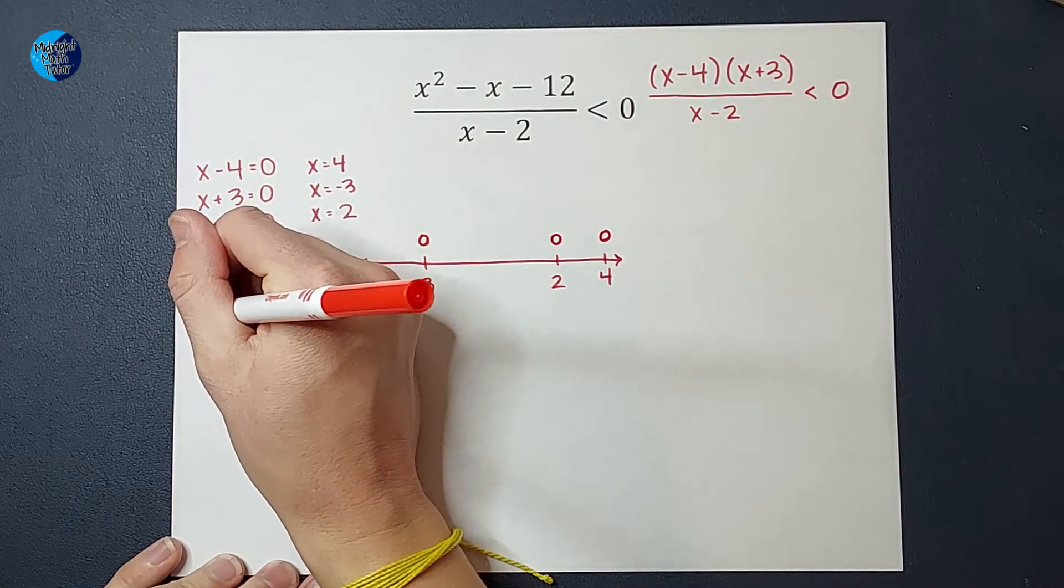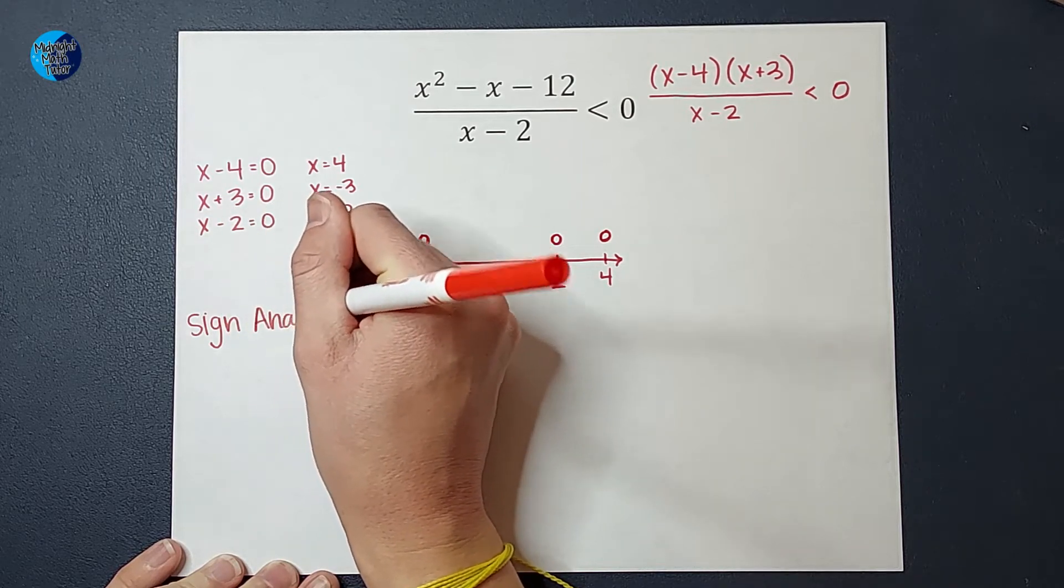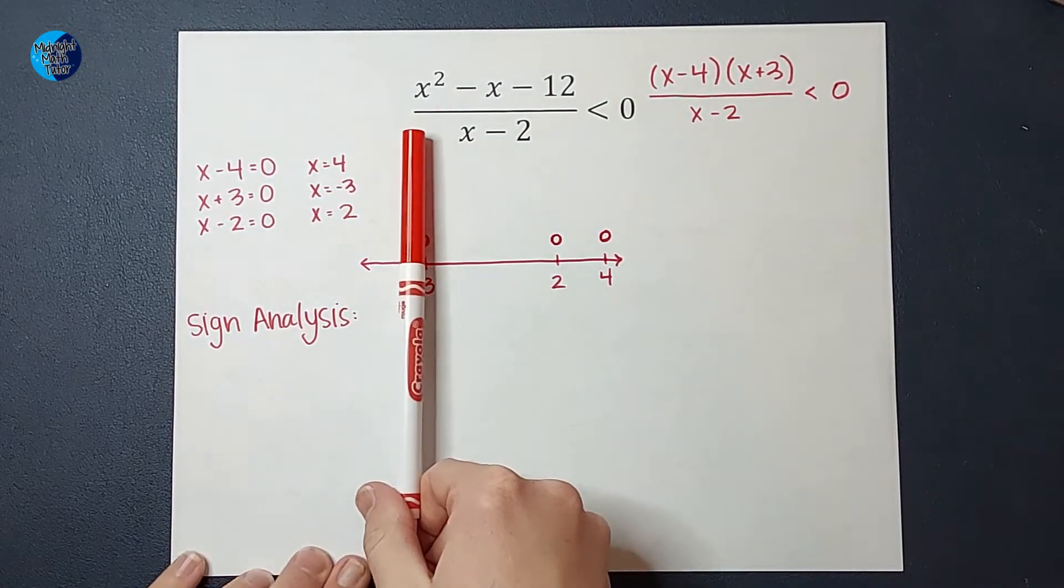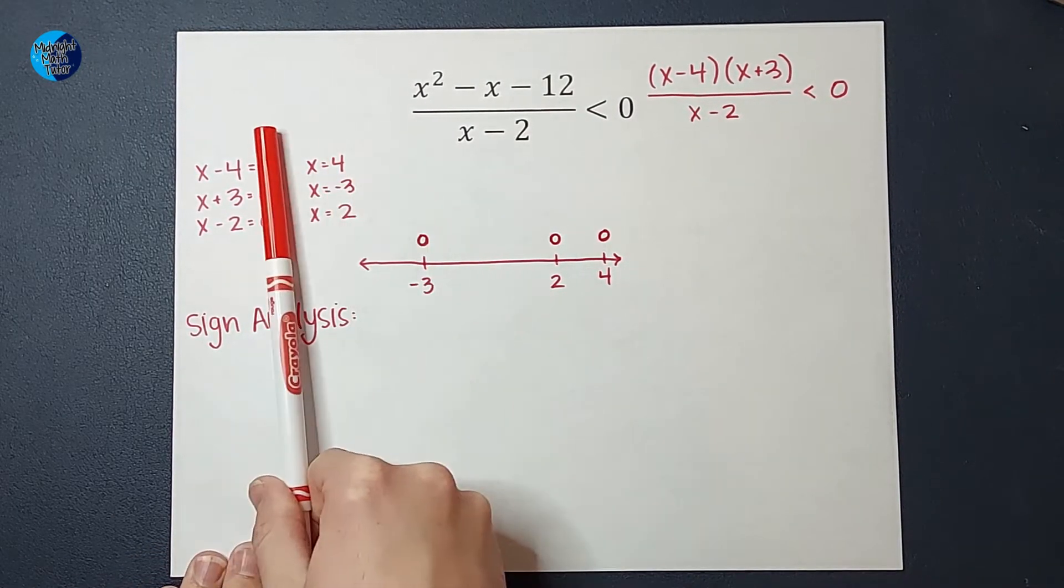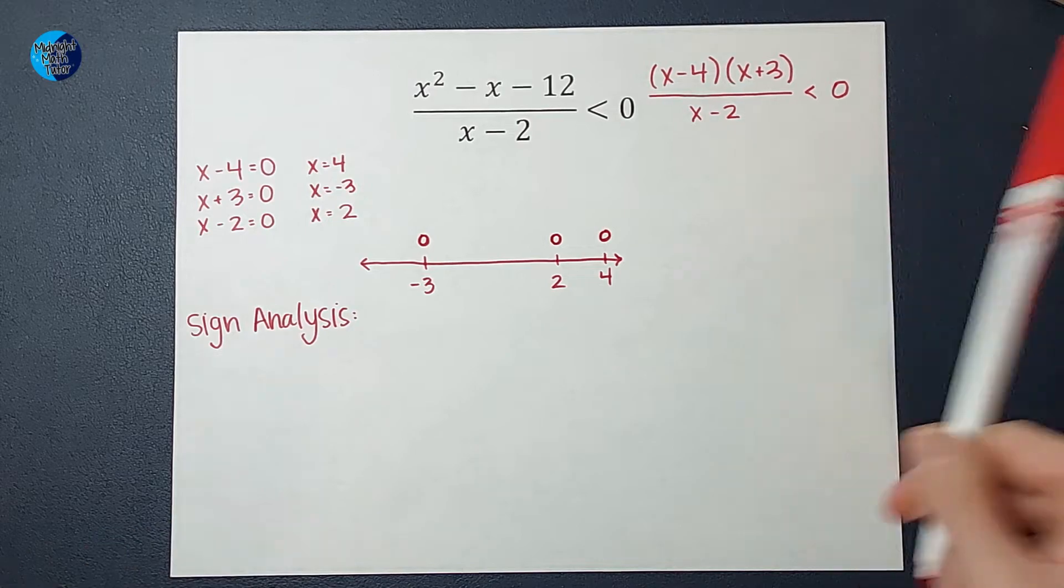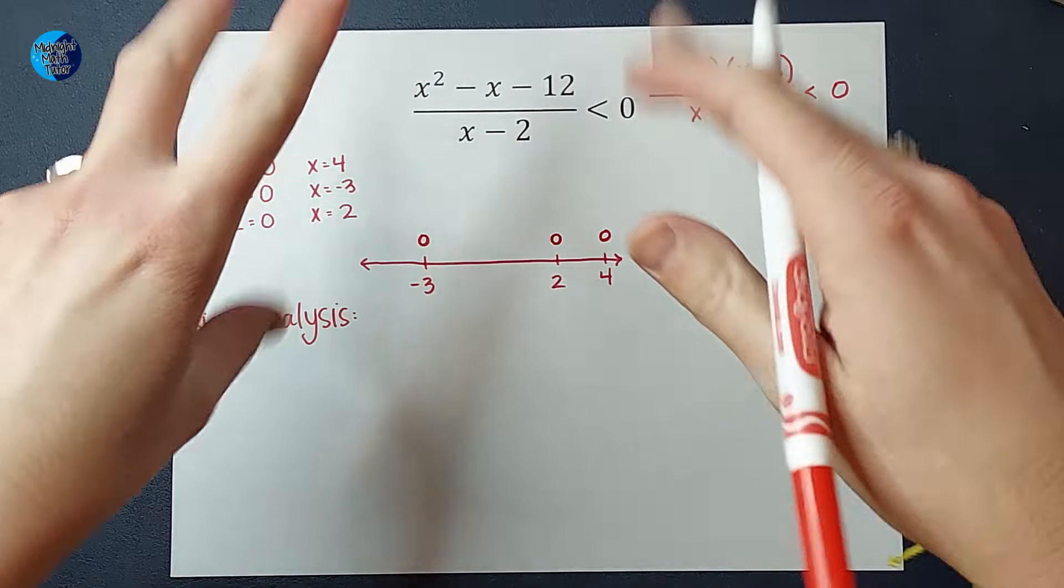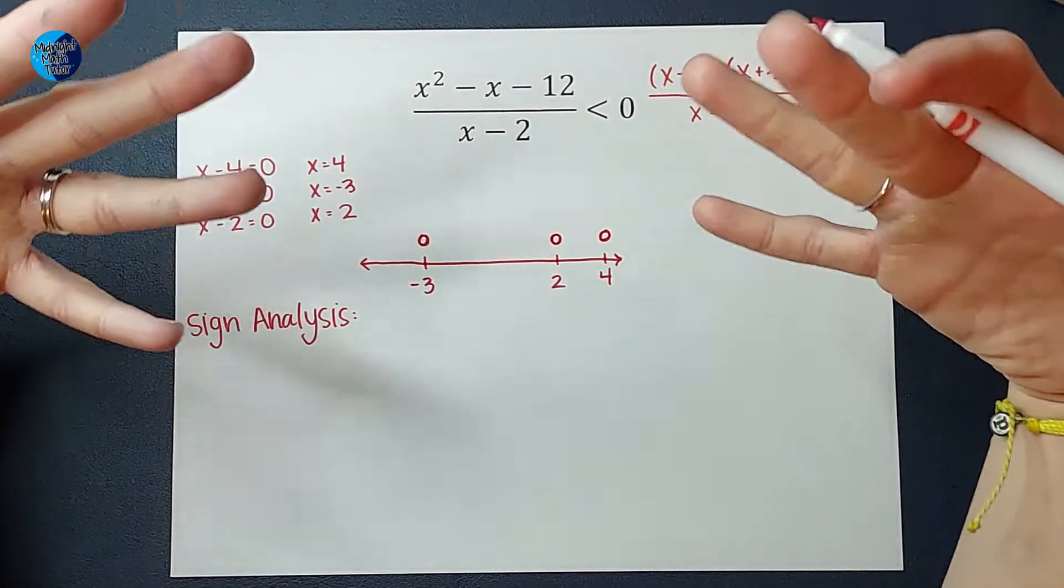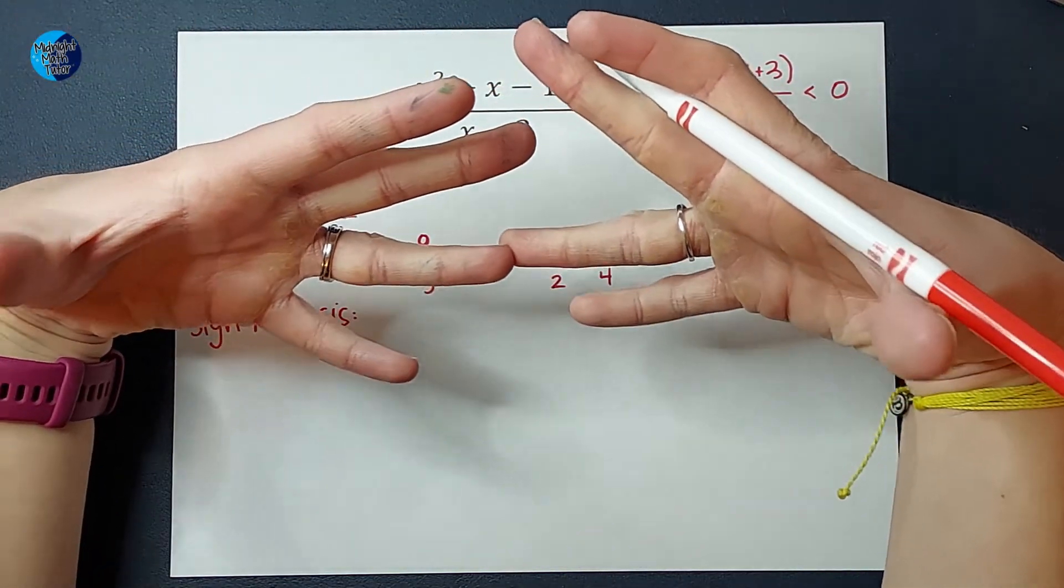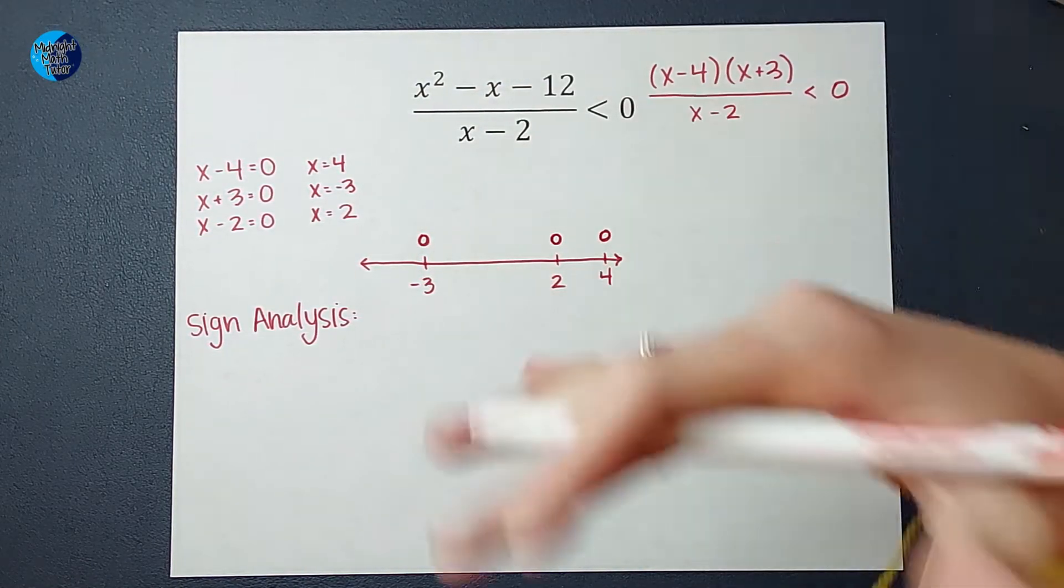The next thing I'm going to do is called sign analysis. I want to know in each of these regions - to the left of -3, between -3 and 2, between 2 and 4, and bigger than 4 - when I plug in a number in that area for x, is my output going to be positive or negative? I am not too concerned right now about what my actual number answer is. I only care about if it is positive or negative.